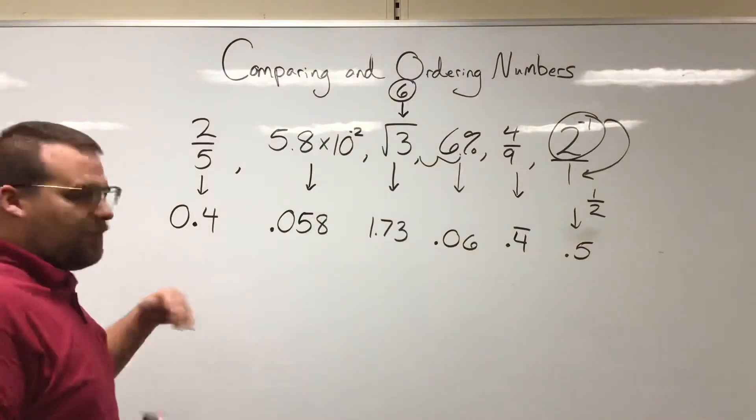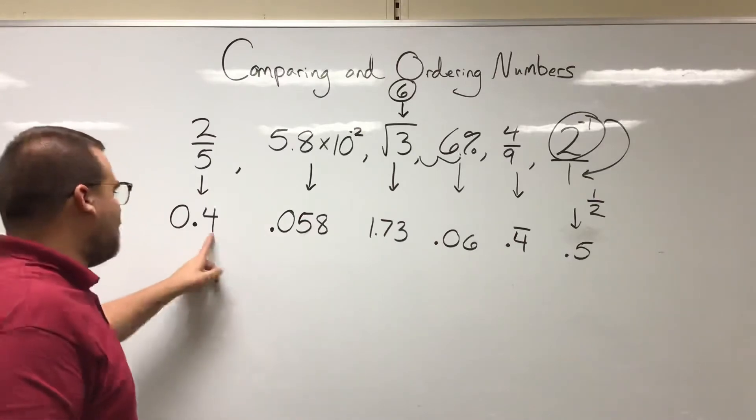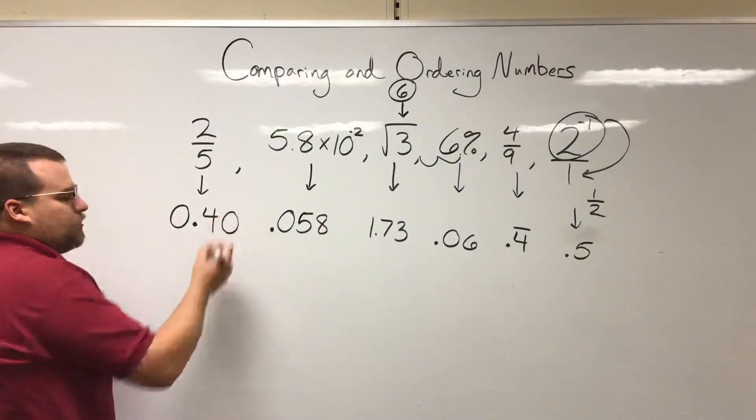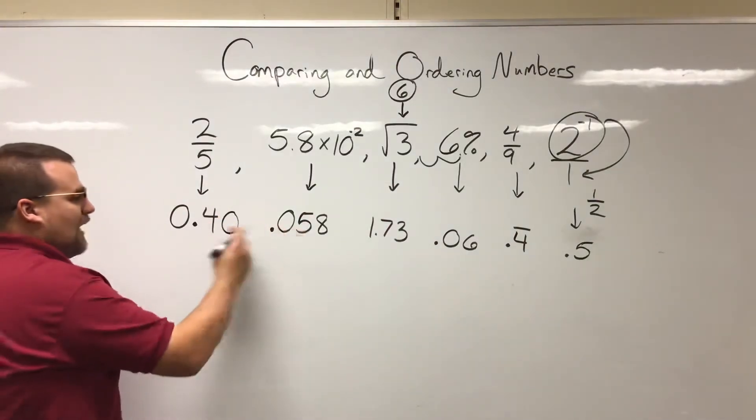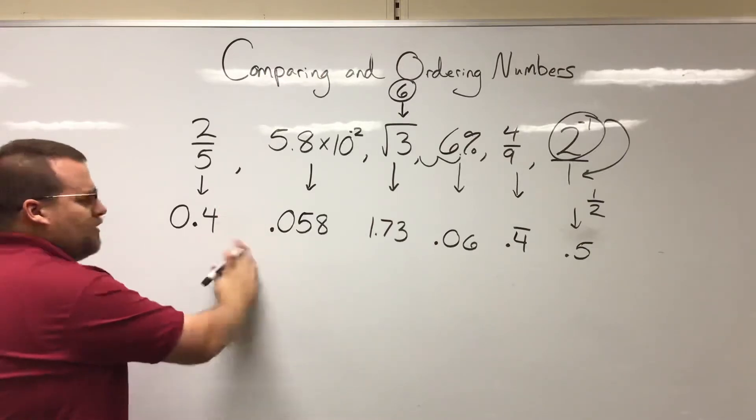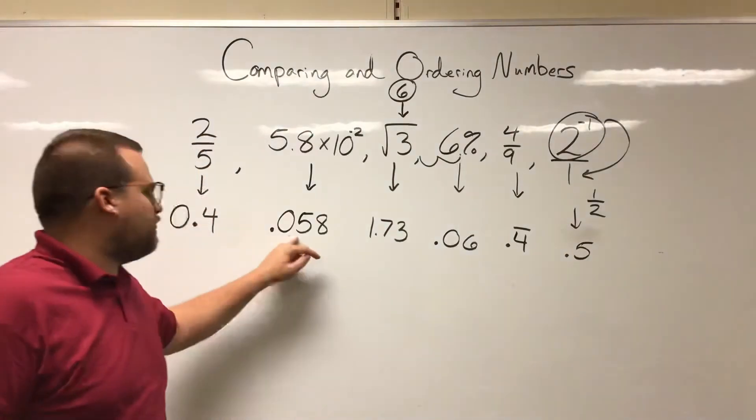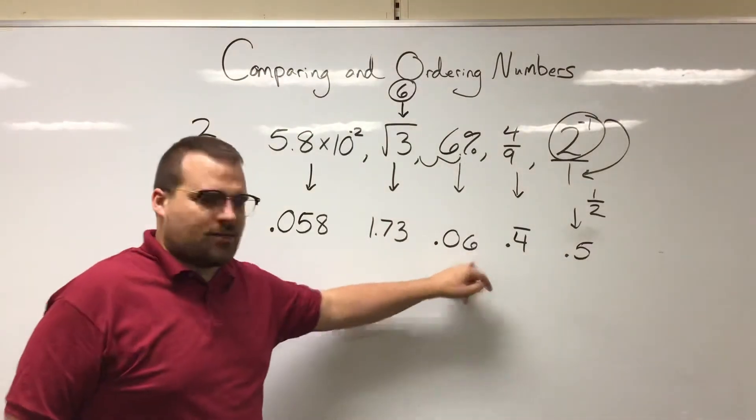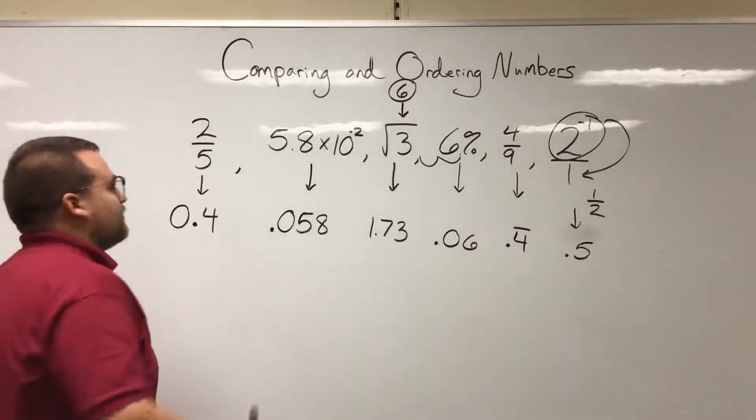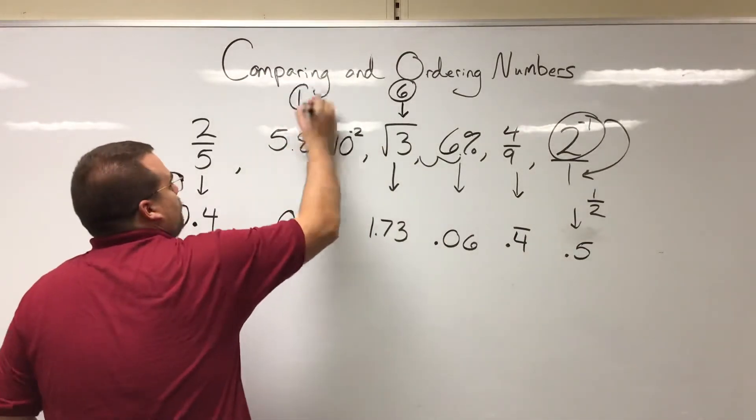Of course 0.05 is smaller than 0.4. Even though five is a bigger number than four, this is like 0.5 as opposed to 4.0 technically. It's like 5 compared to 40, right? So the smallest number we have, we have two of them that start with a zero after the decimal. We have 0.05 and 0.06. Well, five is smaller than six. So this is actually going to be our smallest number.